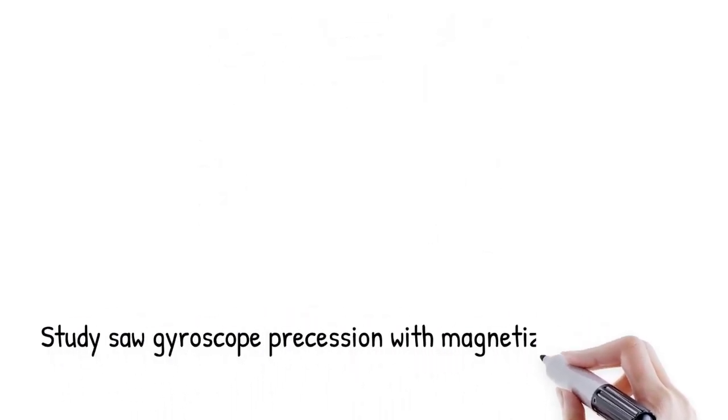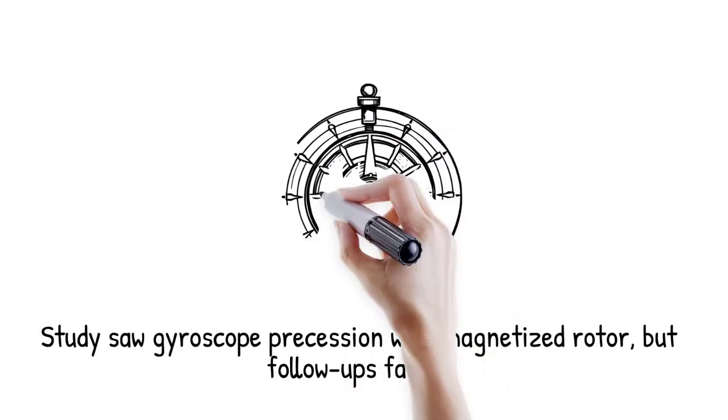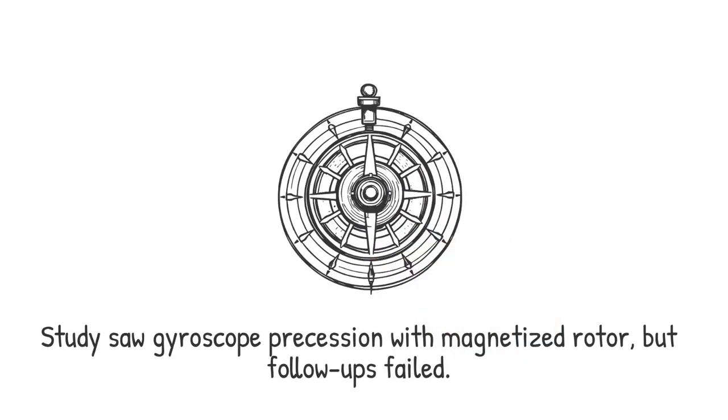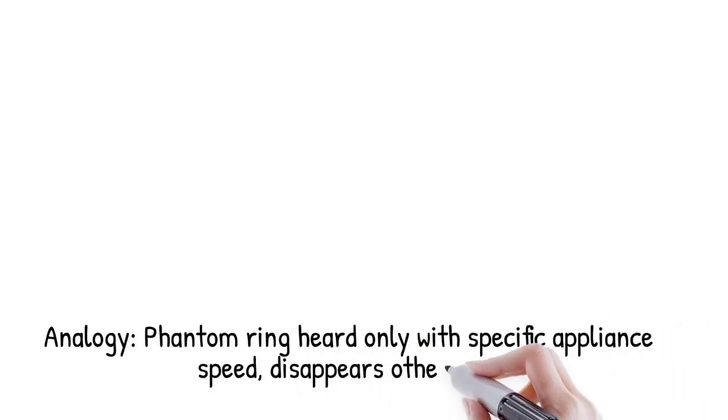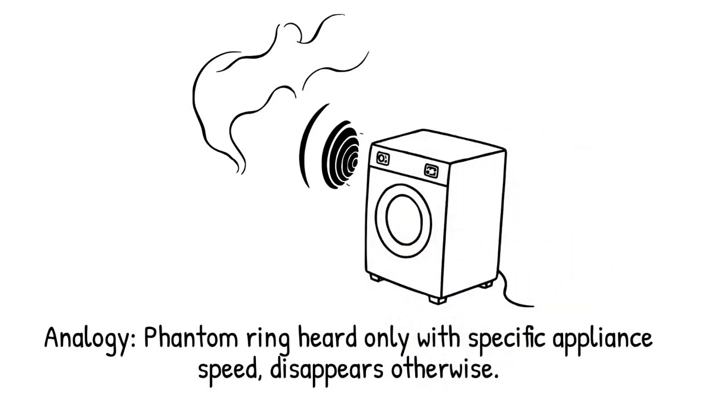One study observed brief precession in a superconducting gyroscope when a nearby magnetized rotor spun above a specific RPM, but follow-up tests failed to replicate it, like hearing a phantom ring only when a particular appliance runs at high speed. Once the background conditions change slightly, the ring disappears.